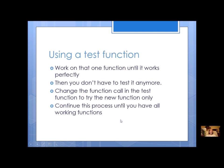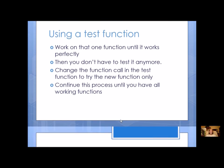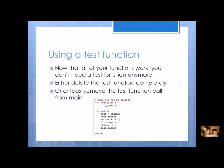Then I'm going to modify main. So now that all your functions work, you don't need a test function anymore. You can either delete the test function completely. I could just take this out, but at least make sure you're taking it out of main. Now my main is going to do all the work. I'm going to call the functions in the order that I want. I don't need test anymore.